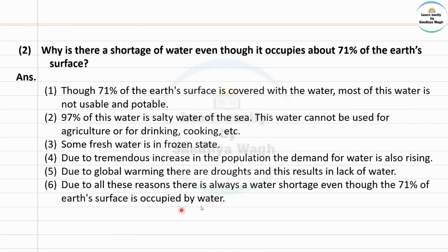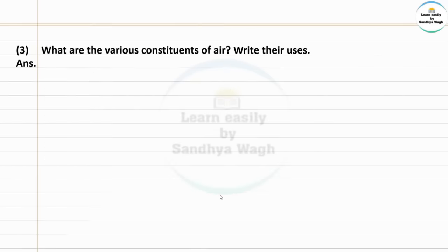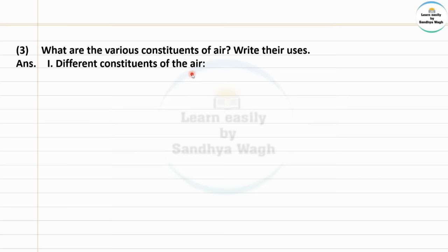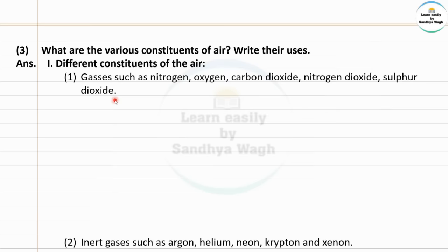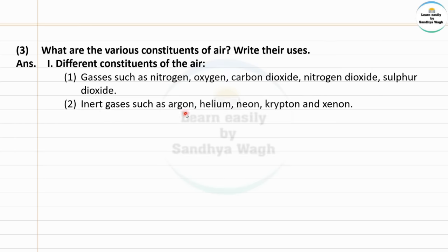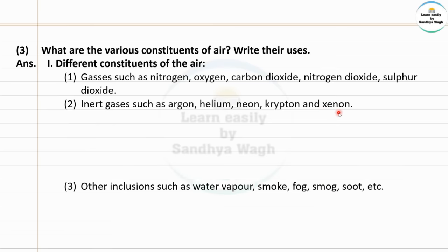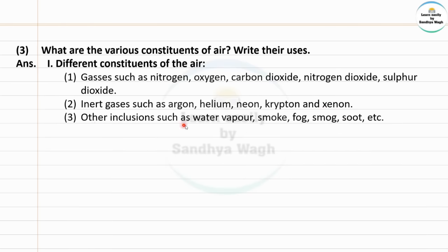Next question: What are the various constituents of air and their uses? Constituents of air are: nitrogen, oxygen, carbon dioxide, nitrogen dioxide, sulfur dioxide; inert gases such as argon, helium, neon, krypton and xenon; other inclusions such as water vapor, smoke, fog, soot, etc.